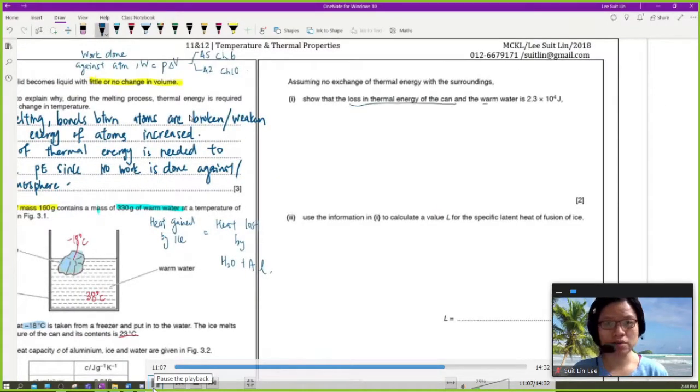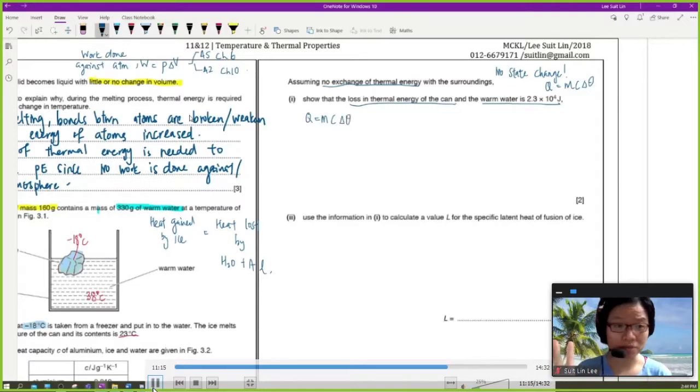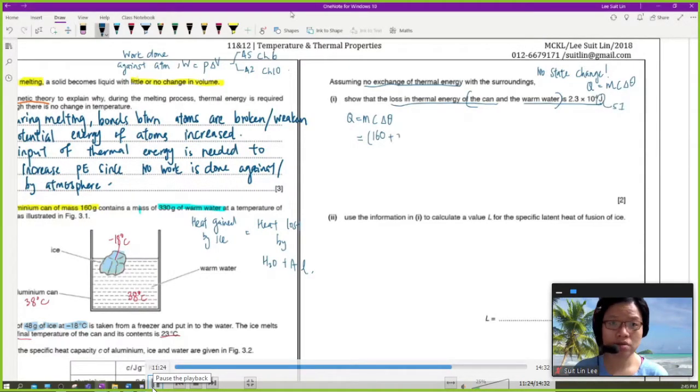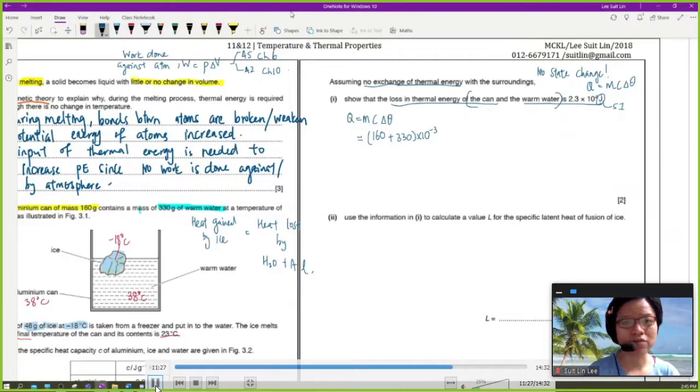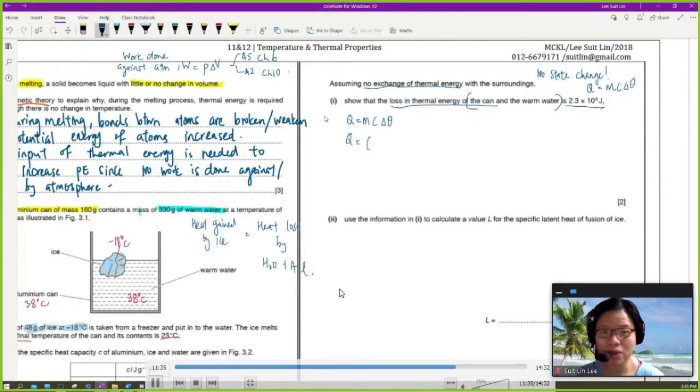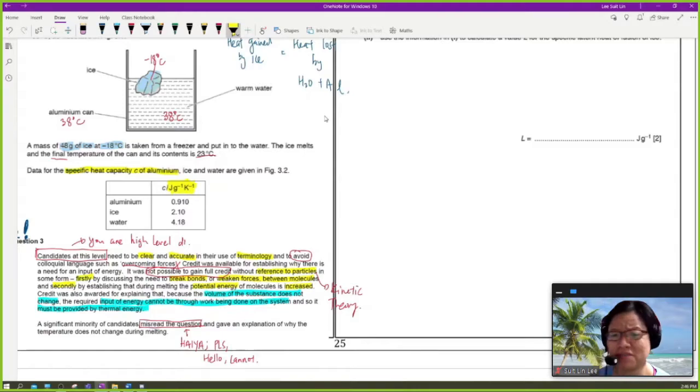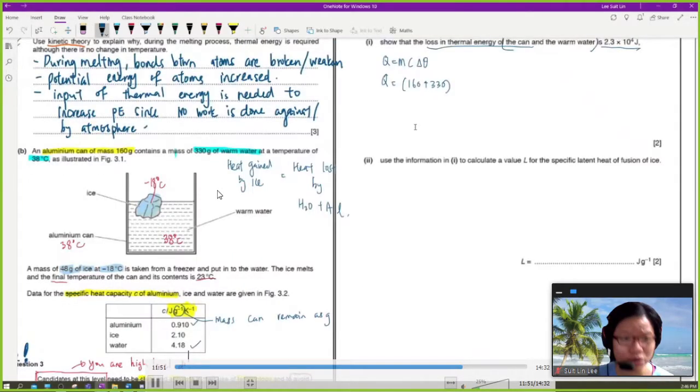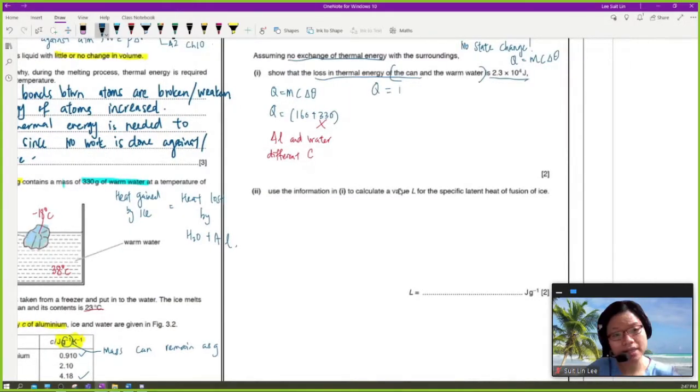So assuming there's no exchange in thermal energy surrounding, what is the loss in thermal energy of the can and warm water? And there's no state change. So no state change will use specific heat capacity. Q is MC delta theta. So from here, you can put the mass. The mass of water and can, the water is 330, the mass of the can is 160 gram. You hold on to your horses first. Let's check the specific heat capacity to see whether we need to convert or not. So one thing you would notice is that the given specific heats are in joule per gram. So keeping gram is okay. But you will notice that the specific heat capacity for aluminium and water are obviously not the same. So mass can remain as gram. They are not the same. So meaning you cannot add them like that. It's very weird. So wrong layout. Aluminium and water have different specific heat capacity. So you have to split them up.